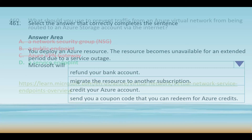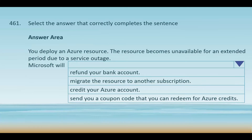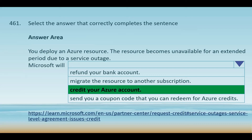Next question. You deploy an Azure resource and the resource becomes unavailable for an extended period due to a service outage. Microsoft will — your options are: refund your bank account, migrate the resources to another subscription, credit your Azure account, or send you a coupon code to redeem for Azure credits. Microsoft offers service credits as compensation in such cases. These credits are applied to your Azure account, which can offset future billing. There is a link on screen for more detail on how this works.